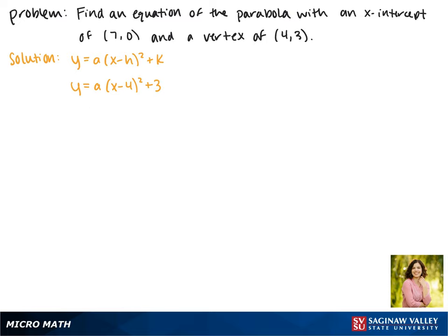Next we want to figure out what a is, so we'll plug in the point (7, 0). This gives us 0 equals a times (7 minus 4) squared plus 3.